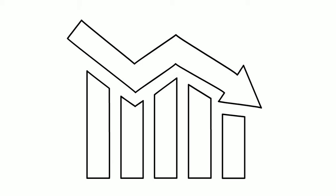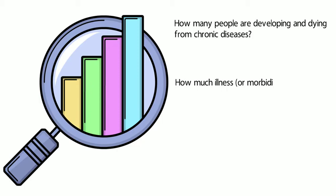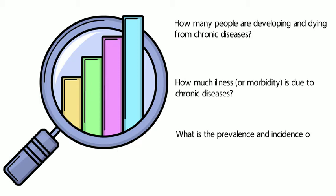Chronic disease surveillance collects data to answer three broad questions: how many people are developing and dying from chronic diseases? How much illness, or morbidity, is due to chronic diseases? And what is the prevalence and incidence of known risk factors for chronic disease development, and how are these changing over time? These are all very important questions, so that public health strategies can be developed and programs implemented to best protect and promote the community's health.